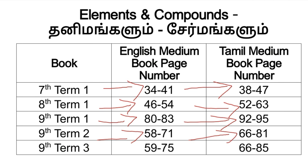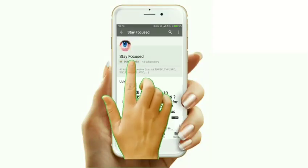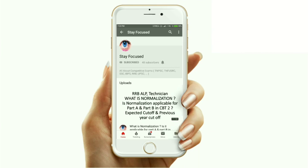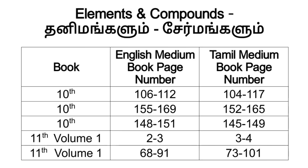Next, 9th standard Term 3 — Carbon and Its Compounds. English Medium book is pages 59 to 75, and Tamil Medium book is pages 66 to 85. Next is the 10th book — Periodic Classification of Elements. English Medium is page 106 to 112, and Tamil Medium is page 104 to 117.